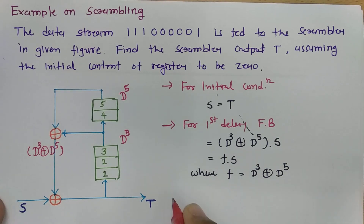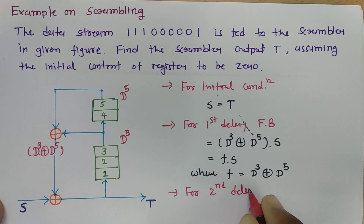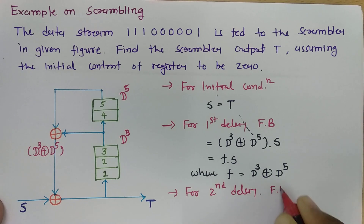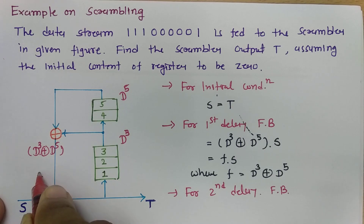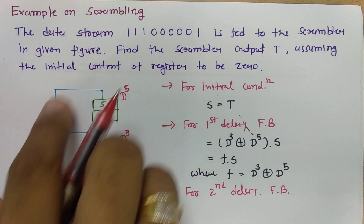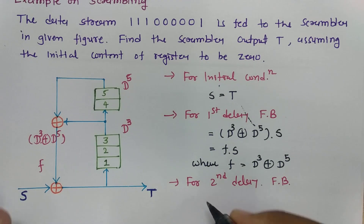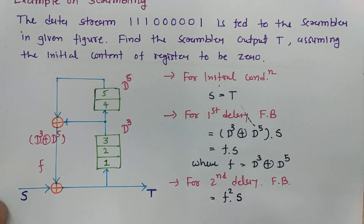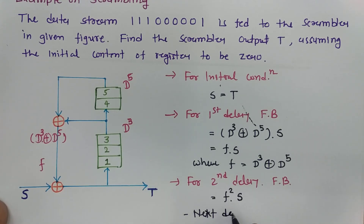Now for the second delay, you will be finding: we already have one feedback f, and another s into f will come in the feedback. So for the second delay, you will be finding this feedback will be f² into s. For the next delay, it will be f³ into s.